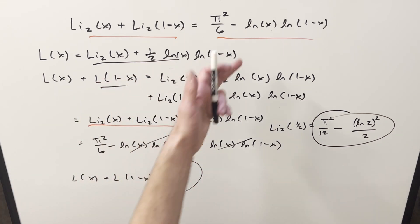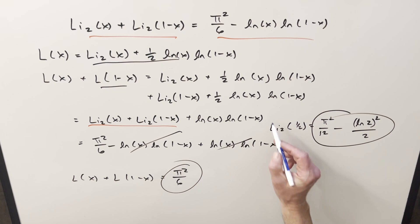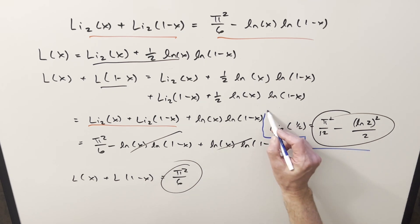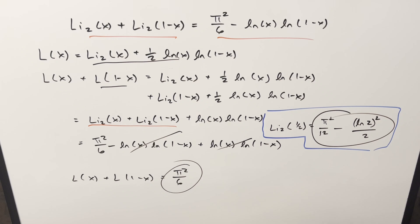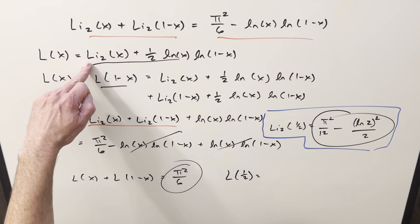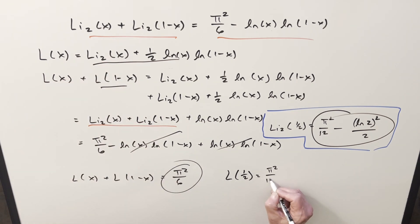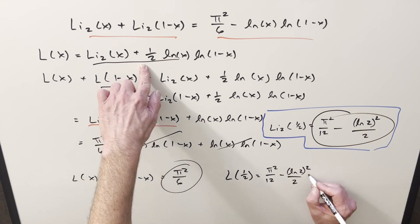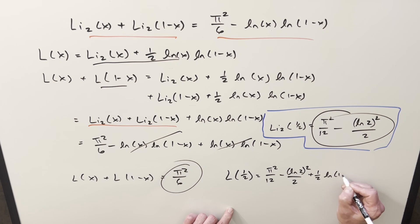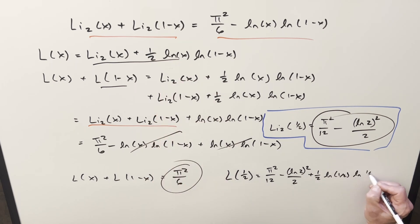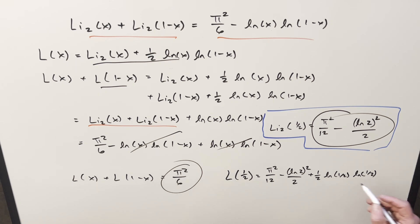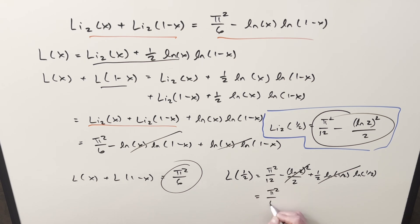That cleans up the reflection formula — it's a trade-off: we added extra terms to the definition and they subtract off in the reflection formula. Then similarly, for the L-function at 1/2, we plug in: Li₂(1/2) is π²/12 minus ln²(2)/2, and the extra term is (1/2)·ln(1/2)·ln(1/2). The minus signs cancel, and that piece cancels with the ln² term, leaving L(1/2) = π²/12.